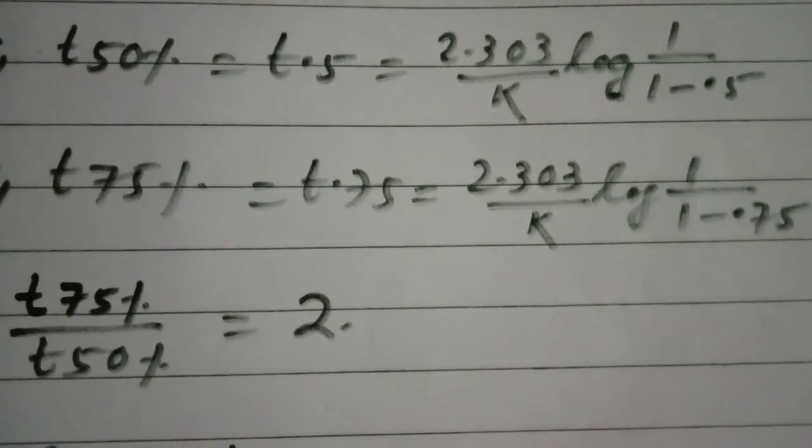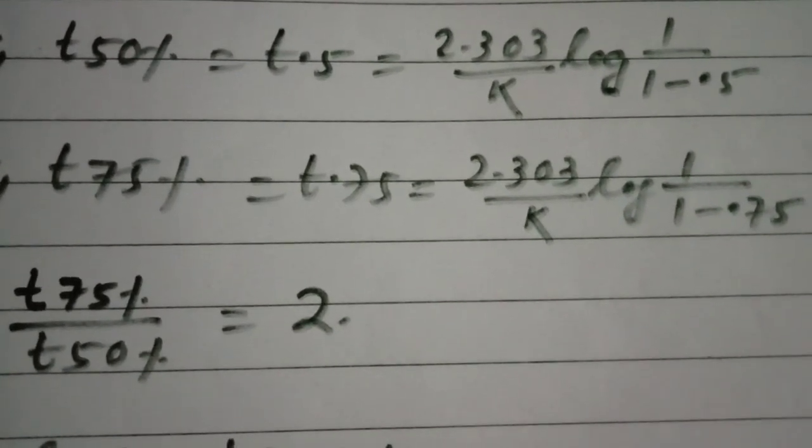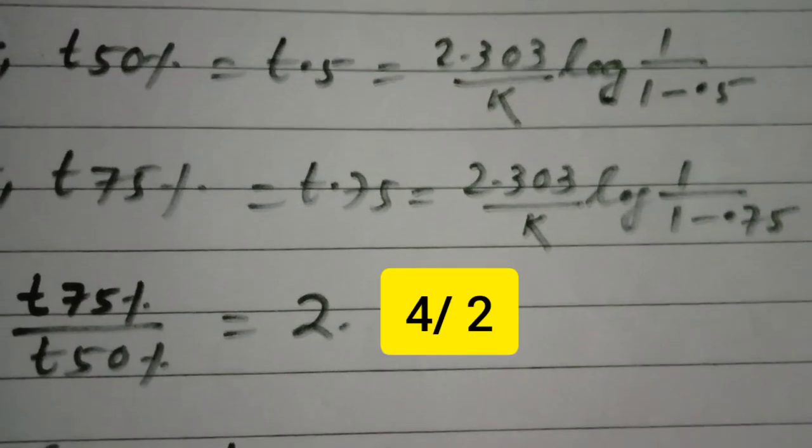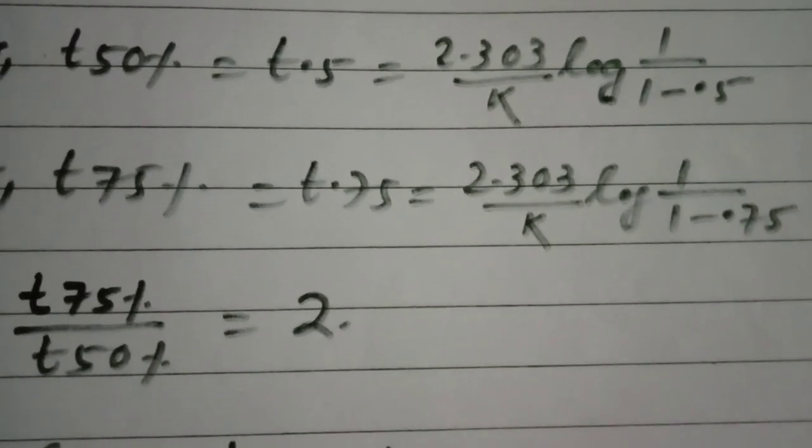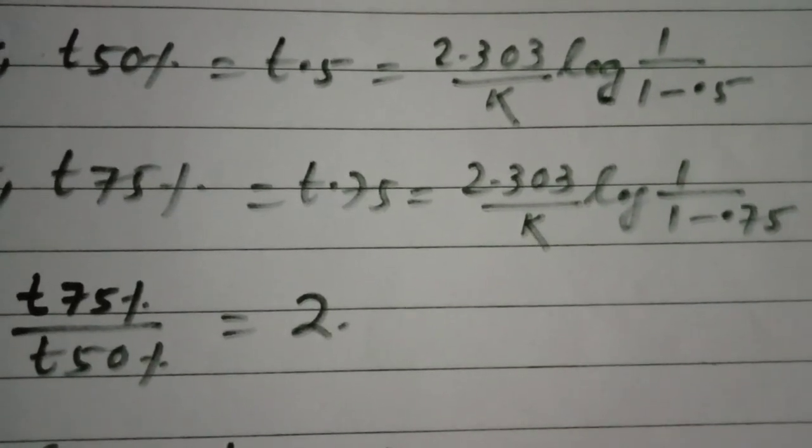If you divide t75 percent with t50 percent, you will be getting 2. So t75 percent is twice that of half-life period, or t50 percent.